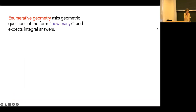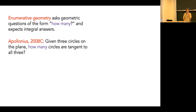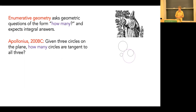The starting point I want to talk about is enumerative geometry, in which we're asking geometric questions of the form 'how many,' and we're expecting integers as answers. This dates back to the ancient Greeks. Apollonius in 200 BC studied the question: if I draw three circles on a piece of paper, how many other circles can I draw which are tangent to all three? Over here in black we've got these three circles as initial conditions, and one solution is drawn in pink.